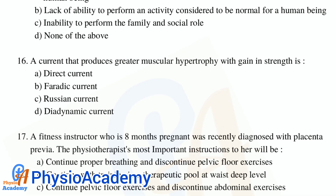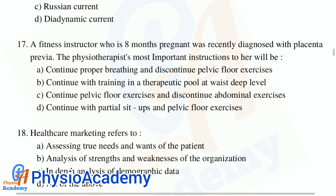Question number 16: A current that produces greater muscular hypertrophy with gain in strength is — Option A: direct current. Option B: faradic current. Option C: Russian current. Option D: dynamic current. The correct answer is option C, Russian current.